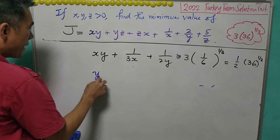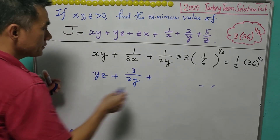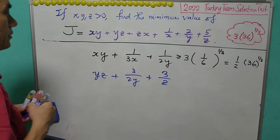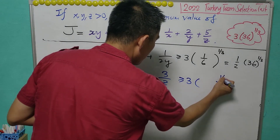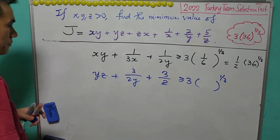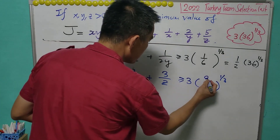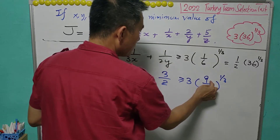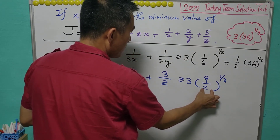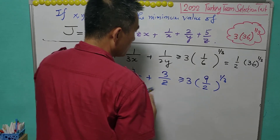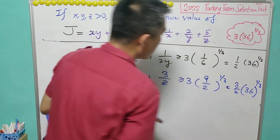Next, we consider YZ plus 3 over 2Y plus 3 over Z. Using AM-GM inequality, this is greater than or equal to 3 times the product to the power of 1 over 3. The product has Y cancel, Z cancel, leaving 9 over 2. To get 36 to the power of 1 over 3, we note that 8 to the power of 1 over 3 equals 2, so this gives 3 over 2 times 36 to the power of 1 over 3.